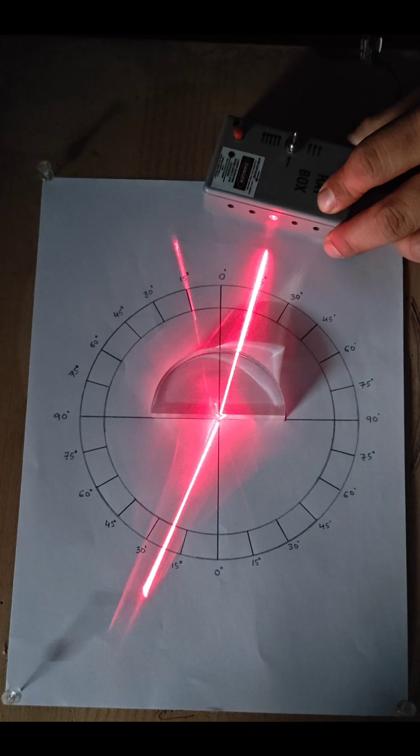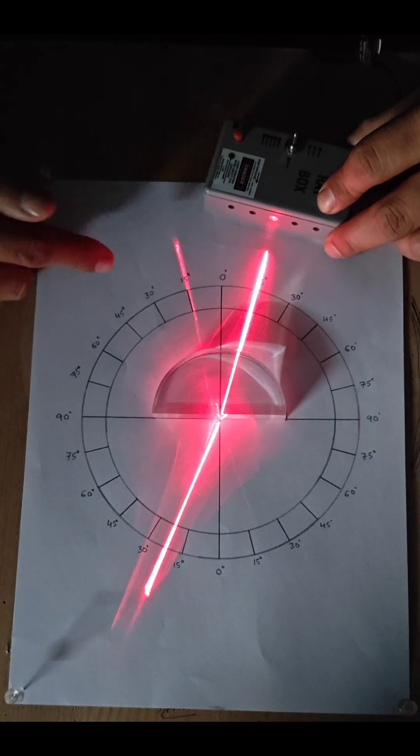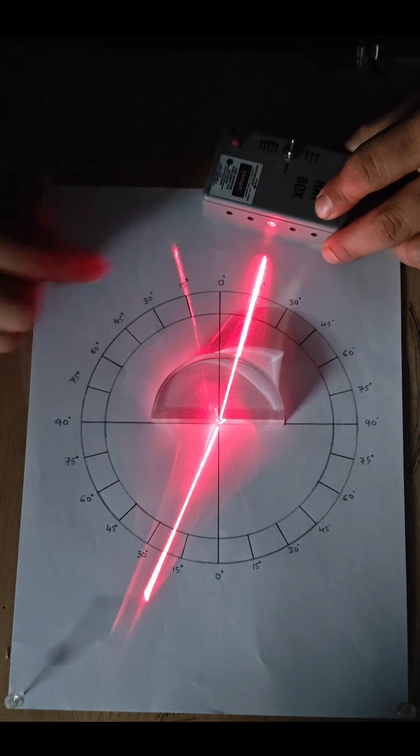So, for 15 degree angle of incidence, we see that the angle of refraction is greater than 15 degree. And we can also see a thin line of reflection taking place.